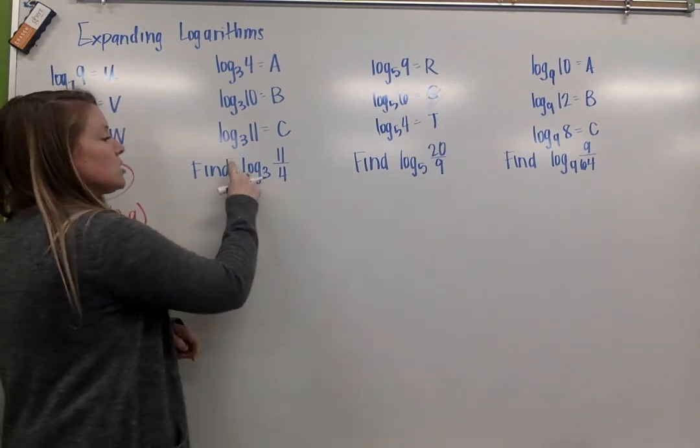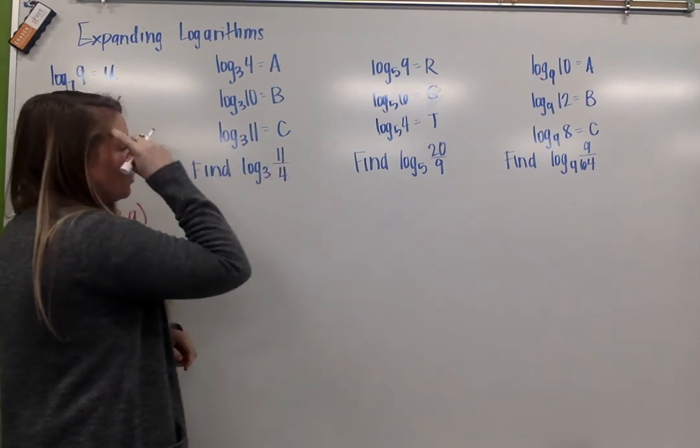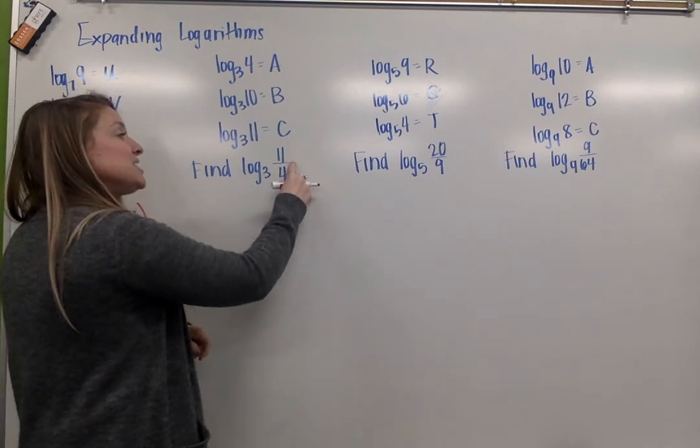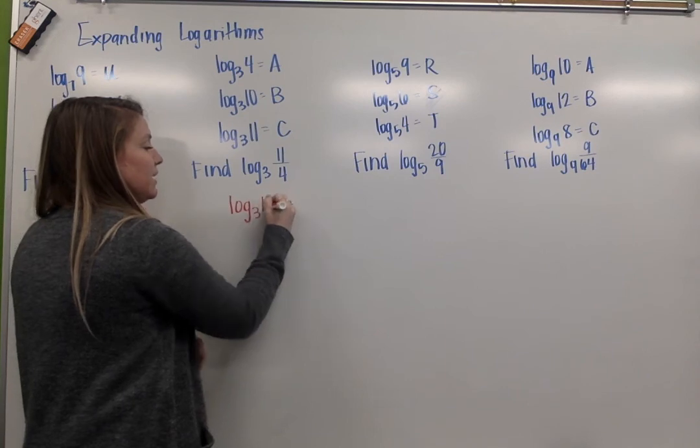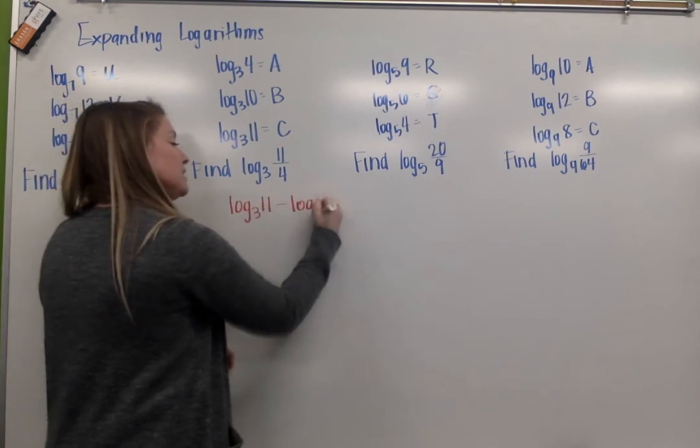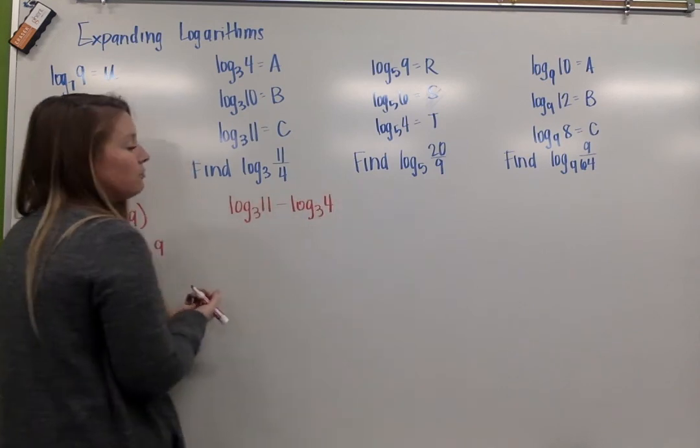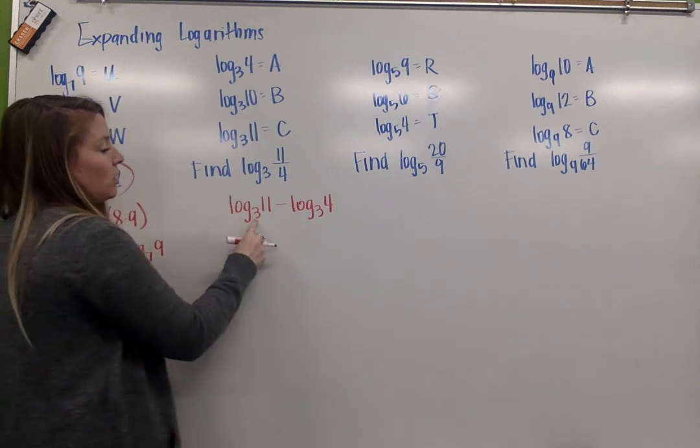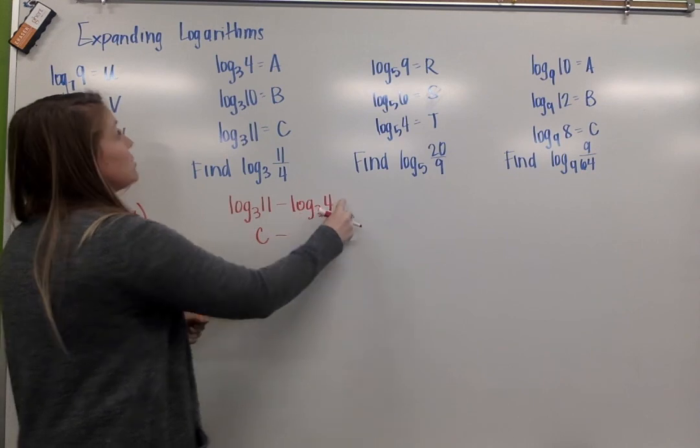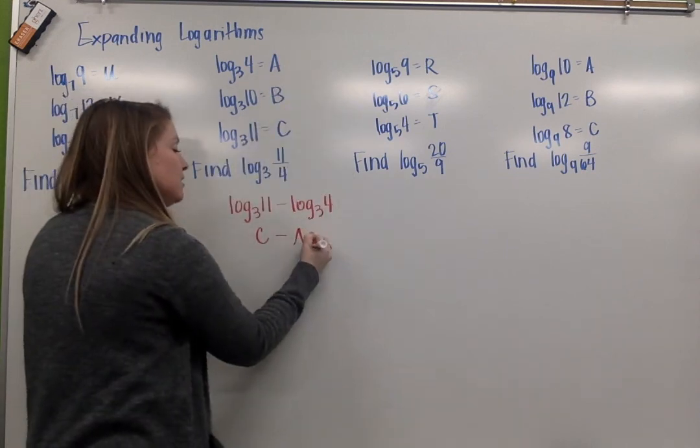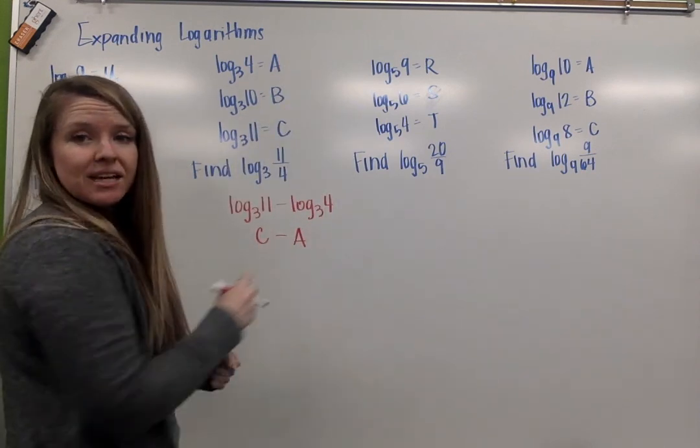Same idea here. So log base 3 of 11 over 4. Well, 11 divided by 4, that is log base 3 of 11 minus log base 3 of 4. So log base 3 of 11, that's c, and log base 3 of 4 is a. C minus a.